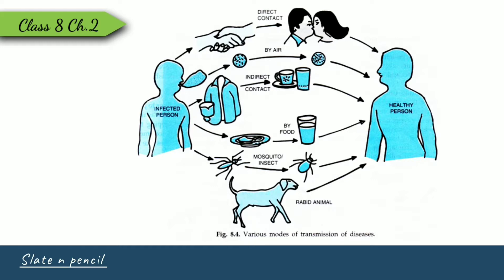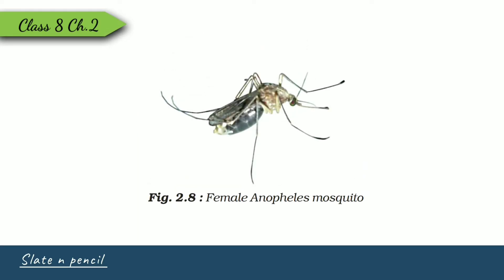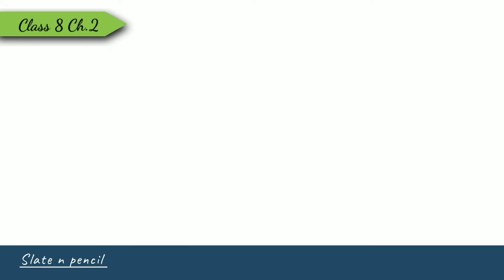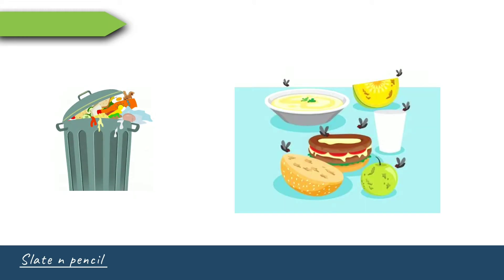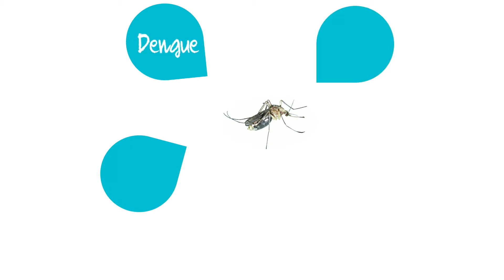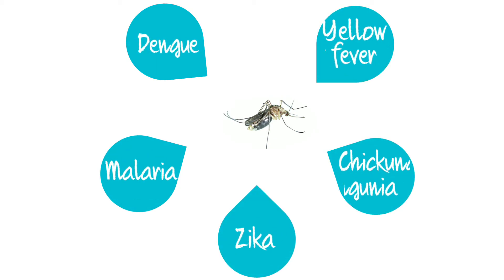Communicable diseases need a carrier to spread. Animals or insects that help spread disease to a healthy person are known as carriers. Houseflies and mosquitoes are common carriers. Houseflies sit on garbage and animal excreta and contaminate uncovered food, so it is advisable to cover food. Mosquitoes cause many diseases like dengue, malaria, and chikungunya.